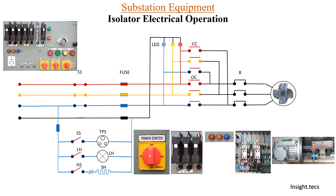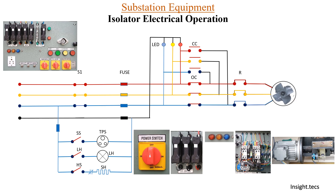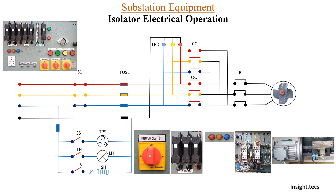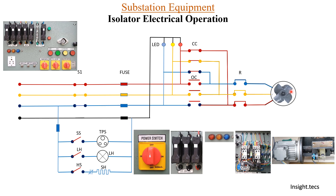When the switch is on, through the fuse and LED, the contactors will be closed. OC means open contactor — when the open contactor is closed, the motor moves in a direction such that the isolator will be opened. When CC, the closed contactor, is closed, the phases are interchanged and the motor rotates in the reverse direction such that the isolator will be closed.